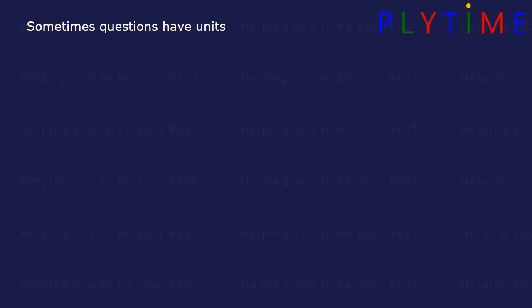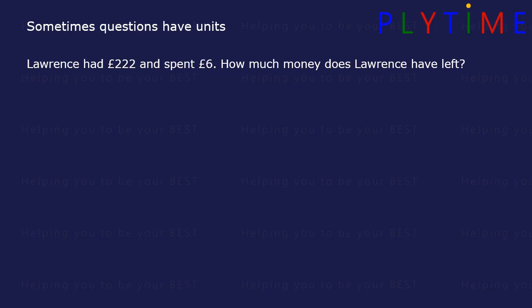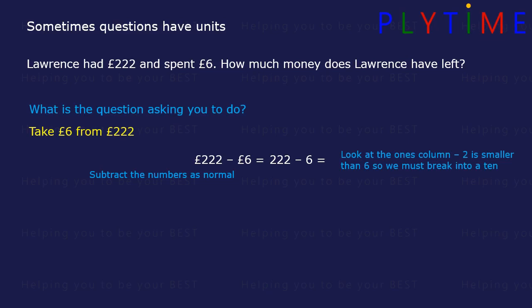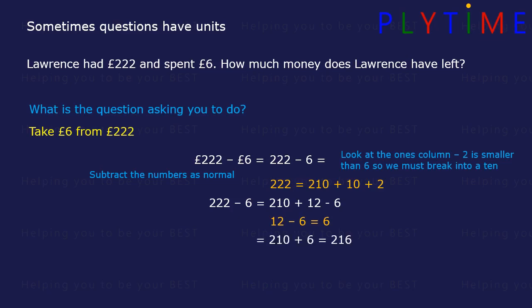Sometimes questions have units. Lawrence had two hundred and twenty-two pounds and spent six pounds. How much money does Lawrence have left? Take six pounds from two hundred and twenty-two pounds. We just subtract the numbers as normal — two hundred and twenty-two minus six. If we look at the ones column, two is smaller than six, so we need to break into a ten. Two hundred and twenty-two is the same as two hundred and ten plus ten plus two. So two hundred and twenty-two minus six is two hundred and ten plus twelve minus six. Twelve minus six equals six, so we're left with two hundred and ten plus six, which equals two hundred and sixteen. So Lawrence has two hundred and sixteen pounds left. Don't forget the units.